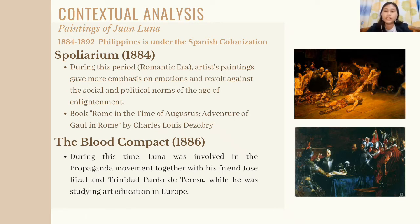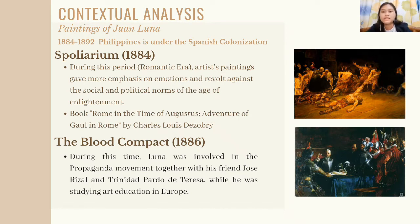In 1886, when the Blood Compact or El Pacto de Sangre was completed, Luna had active involvement in the propaganda movement together with Jose Rizal and other personalities while he was studying art in Europe. Understanding his political opinion and the fact that the Blood Compact was completed in Europe, it is clear that he wished to communicate to audiences the promise Spain made in the Sandugo ritual for an equal partnership with the Philippines, hoping that public opinion might pressure Spain to fulfill their promises. The Blood Compact is one of the paintings he gave to the Ayuntamiento de Manila in return for the scholarship he received for his studies in Madrid.